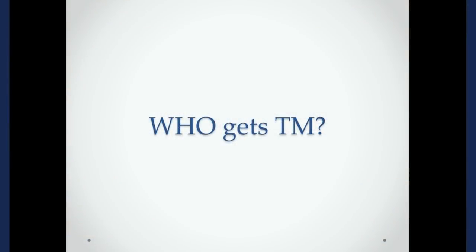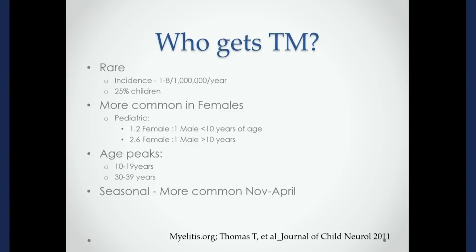So who gets transverse myelitis? In general, not very many people — it's a rare condition. Estimates are somewhere between one to eight per million per year. But of those, a pretty significant portion — 25% — are children. There's going to be a little bit of a pediatric influence on this talk given my background. And it is more common in females, particularly after puberty.